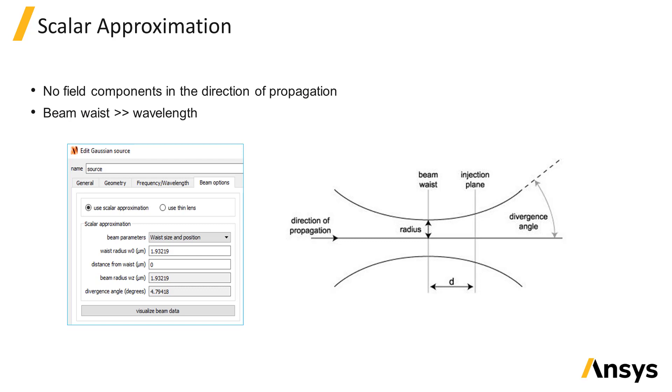The parameters of the scalar approximation beam are either the combination of the beam waist radius and the distance between the source injection plane and the focal plane of the beam, or the beam waist radius at the source injection plane and the divergence angle of the beam. These beam properties are illustrated in this diagram.